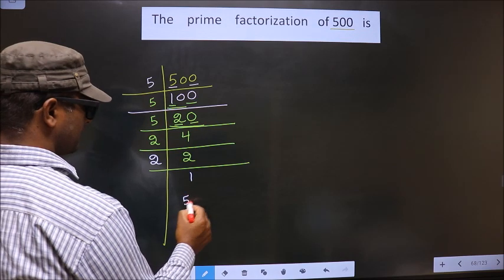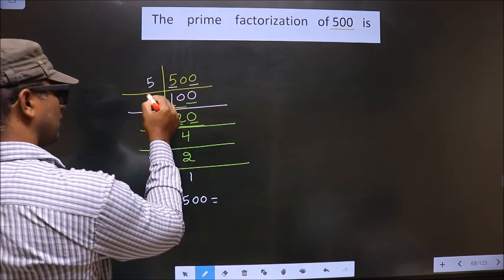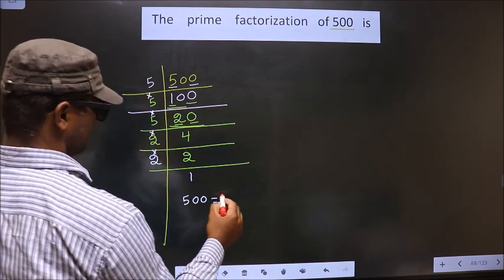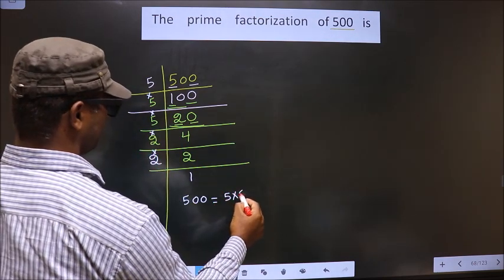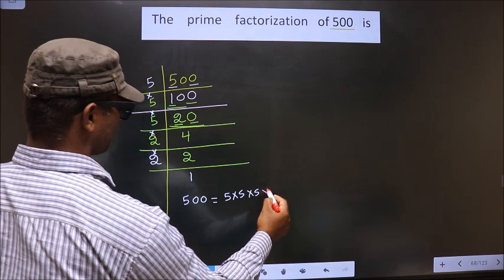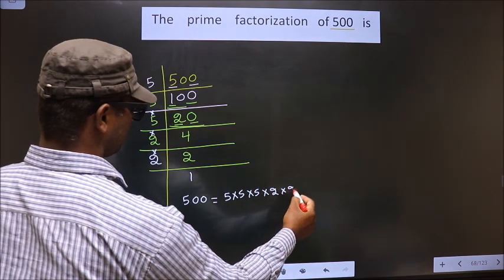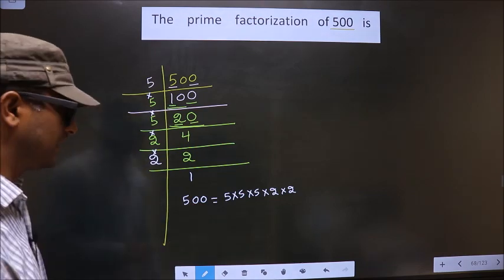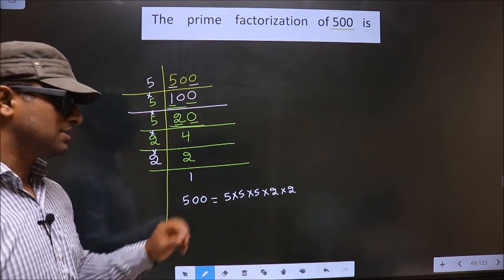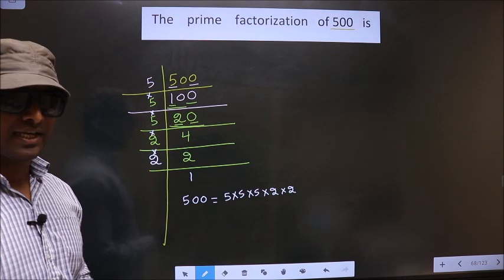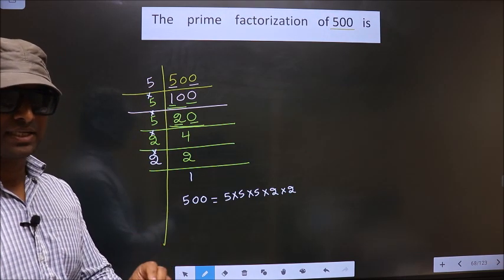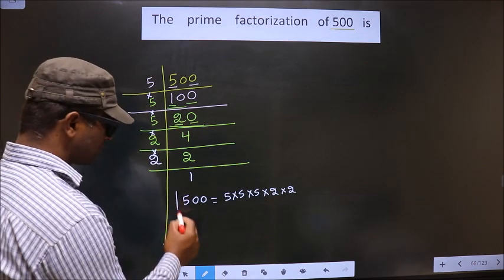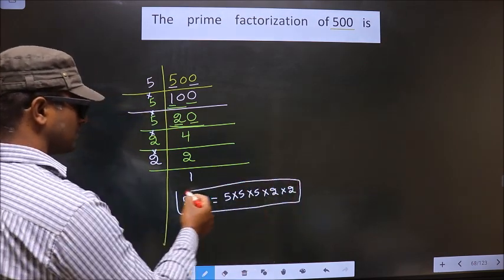So, the prime factorization of 500 is — you put a multiply symbol between them — that is 5 × 5 × 5 × 2 × 2. This is the prime factorization of 500, also called the product of prime numbers of 500. So this is our answer.